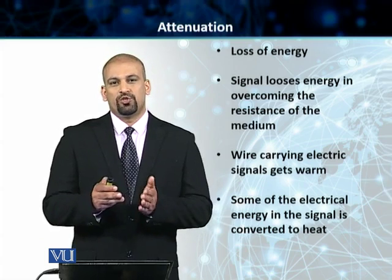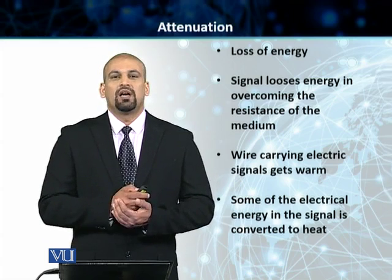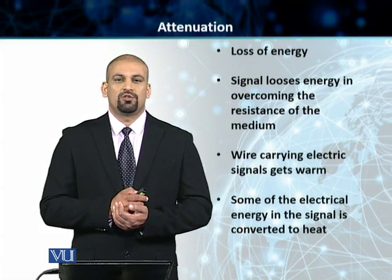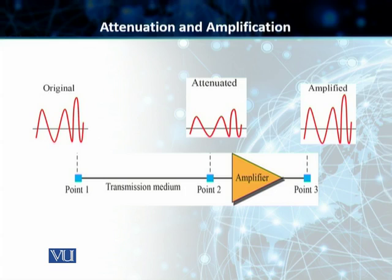There are multiple processes by which we can overcome attenuation. We will discuss the amplification process in further detail. In the figure, you can see that we have an original signal. It starts at point 1 and is transmitted to point 2. When it reaches point 2, the signal is attenuated — it has lost energy, not its shape or form, just energy. What we do to restore it to the original format is amplify the signal. A normal technique employed to recover the original signal from the attenuated signal is amplification, as shown in this slide.